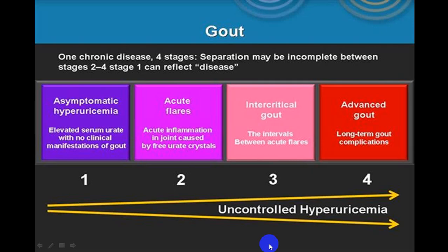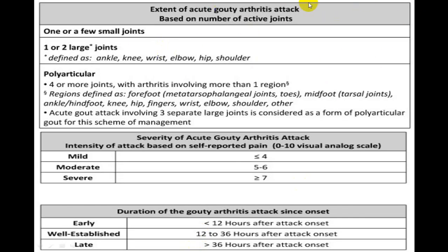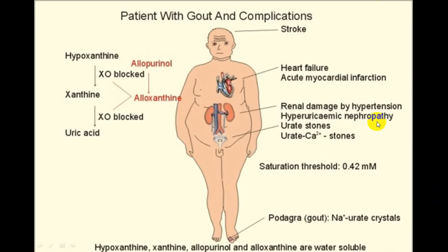Gout severity is classified as mild (less than 4 joints), moderate (5–6 joints), or severe (more than 7 joints). It can also be categorized as early, well-established, or late based on duration. Associated complications include stroke, acute myocardial infarction, renal damage, nephropathy, and joint deformity. Dietary management is important but not covered in detail here.